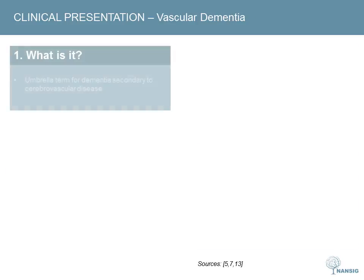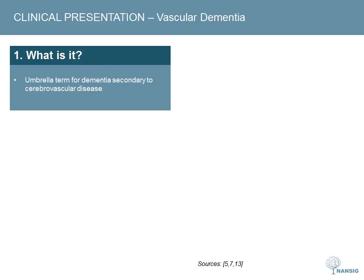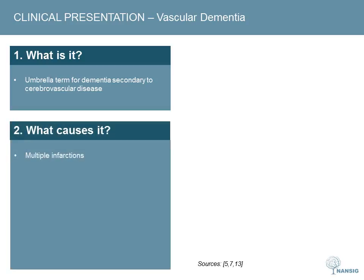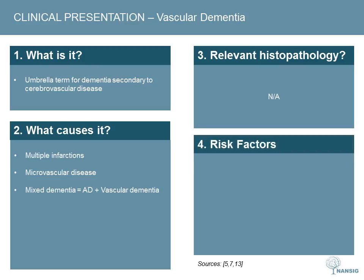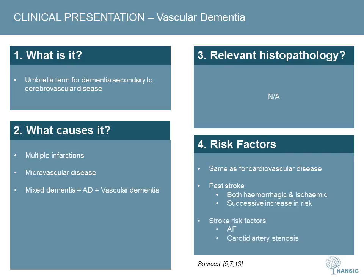Vascular dementia is an umbrella term for dementia which develops secondary to cerebrovascular disease. The classical model, also called multi-infarct dementia, involves cognitive impairment after a stroke which worsens with each future infarct, causing a stepwise pattern of decline. Patients may also have microvascular disease affecting the subcortical white matter, which is actually more common than multi-infarct dementia. Sometimes vascular dementia overlaps with Alzheimer's disease — this is called mixed dementia. Most risk factors are essentially the same as for cardiovascular disease. Past haemorrhagic and ischaemic strokes both increase risk, as do atrial fibrillation and carotid artery stenosis.